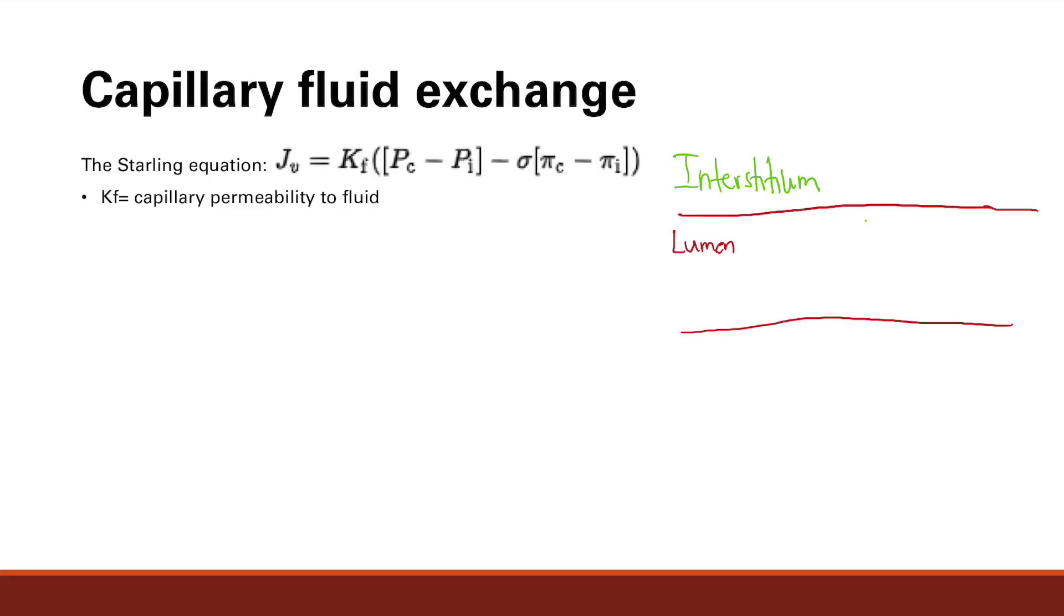The final piece of the puzzle for vascular physiology is capillary fluid exchange, which is high yield, very high yield, very often commonly tested, and it is determined by the Starling equation. This determines whether fluid is going to be going in or out of the capillaries.